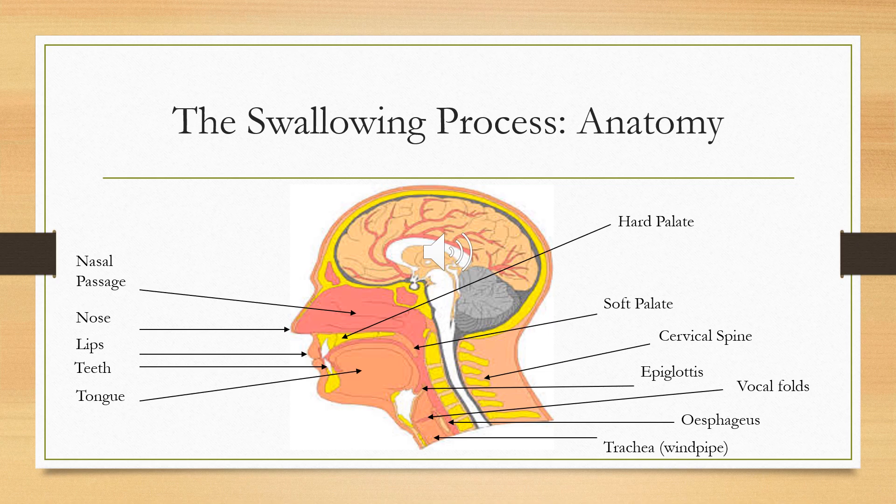Underneath that we have the epiglottis — a leaf-shaped muscle which moves and closes over the area going down towards your lungs. Underneath the epiglottis we have the vocal folds, which come together and vibrate to produce sound. There are different sounds the vocal folds produce depending on how they're positioned. They come together as another protective mechanism during the swallow, covering over the airway. When the vocal folds are nice and lax, they produce sounds like 'ahhh', and when they're nice and tight, sounds like 'ehhh'.